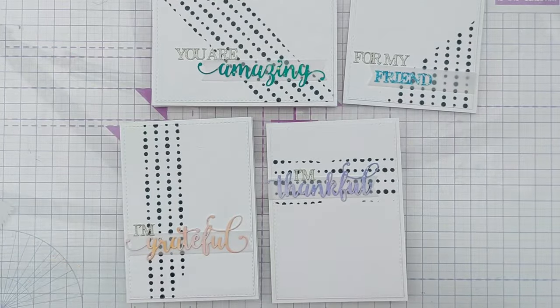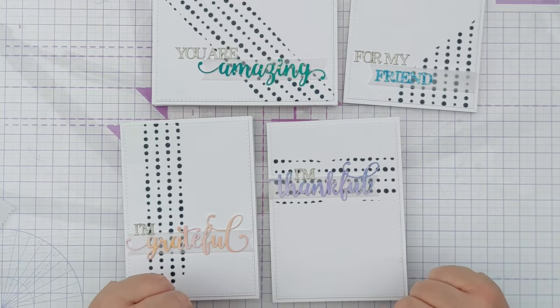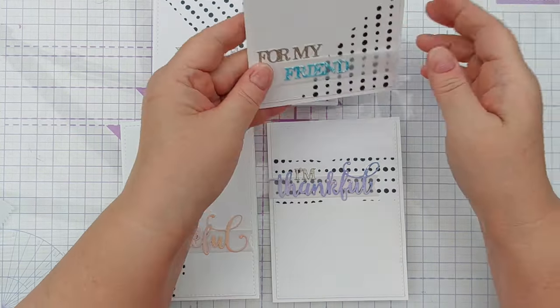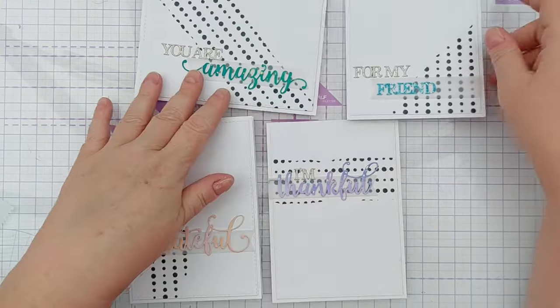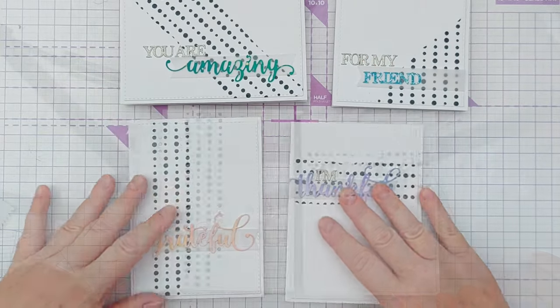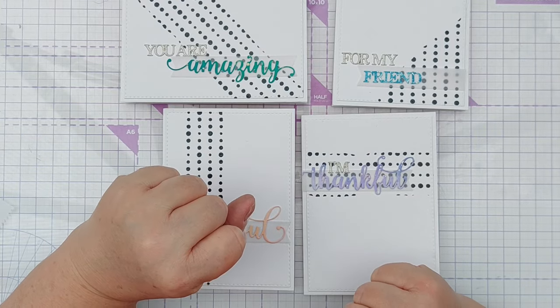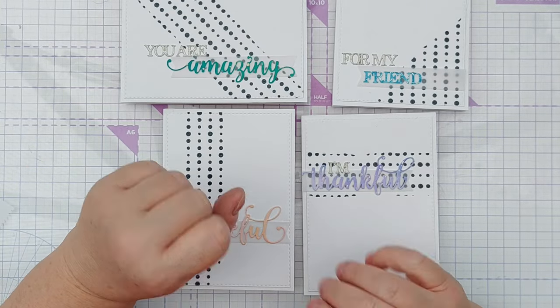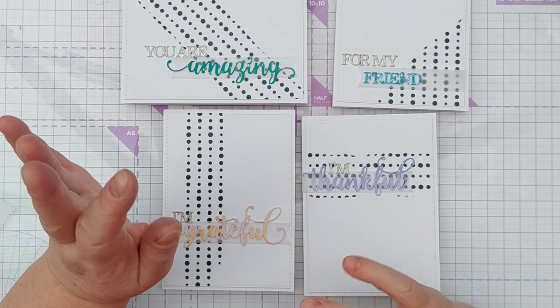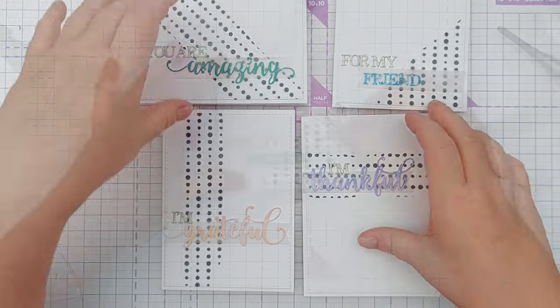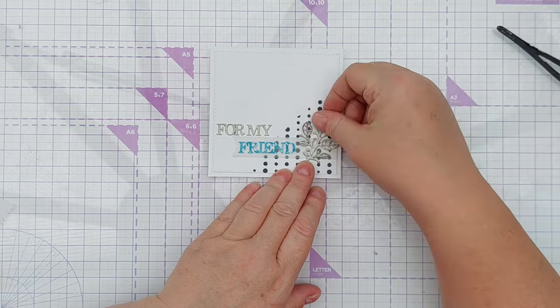So now we've got You Are Amazing for my friend. I'm grateful and thank you. And I've put them on card blanks. This one is just going to be a small note card and I can make an envelope for that using my envelope punch board. And I'm thinking these three are finished although I might add some gold glitter cardstock circles, little dots. I'll have a think about whether or not that will add or detract. And I'm thinking for this one to fill up this little gap here, a gold leafy thing.